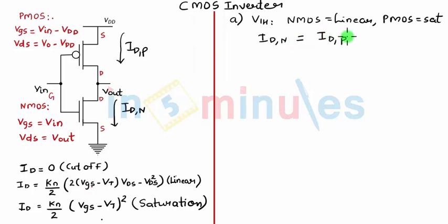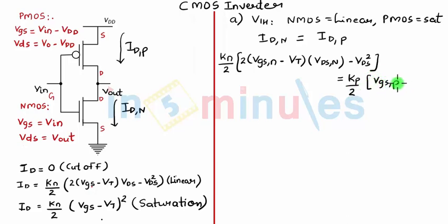Let's write the equation of ID for NMOS in linear region first: KN by 2 times 2(VGS,N minus VT) times VDS,N minus VDS,N squared, equal to KP by 2 because it is a PMOS, VGS,P minus VTP the whole squared.